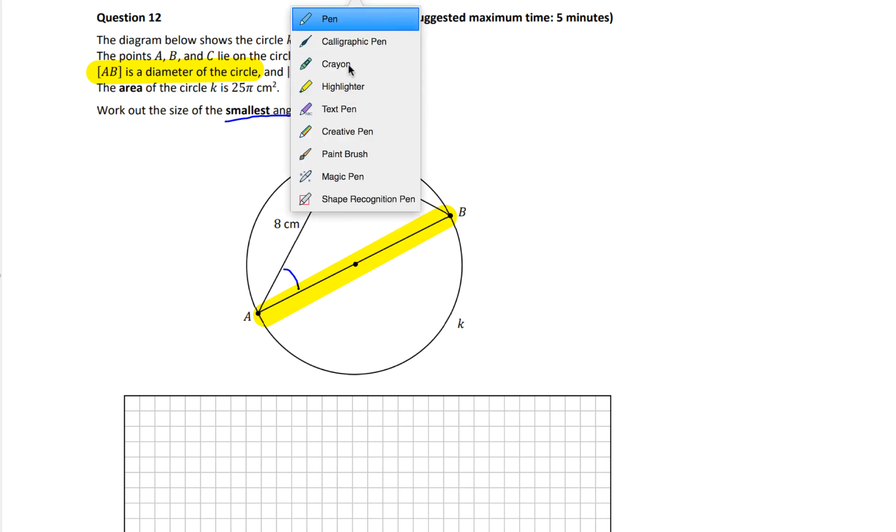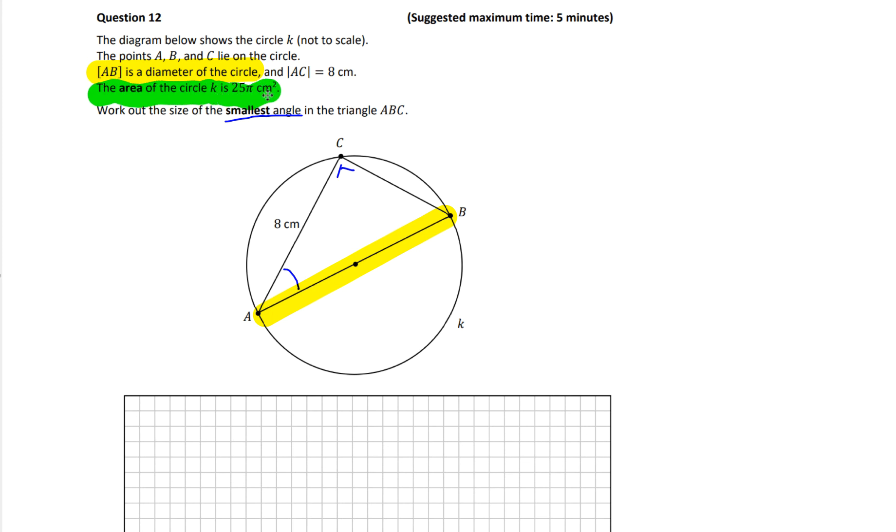Well, the other bit of info we have is the area of the circle. So we're going to have to use this somehow. So the area of the circle K is 25π centimeters squared. So I know that the area of a circle from my tables book is πr². That's the formula for the area of a circle. It's in your tables book. And we know that the area of this circle is 25π centimeters squared. So if I let πr² equal to 25π, from this I'm able to work out r because π is a number that's common to both sides and I could divide both sides by π.